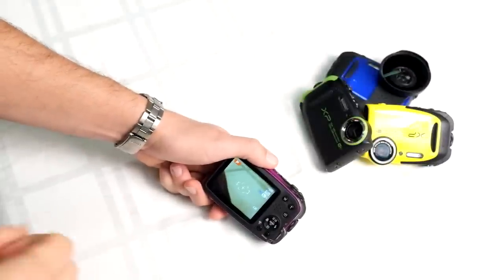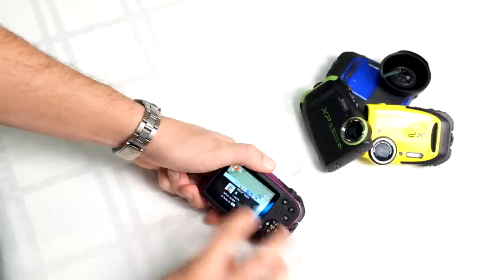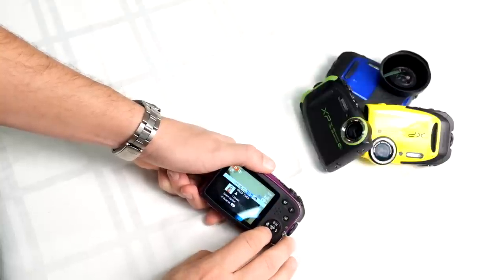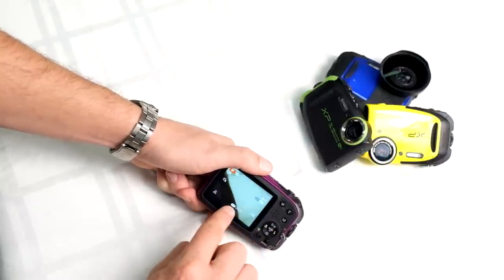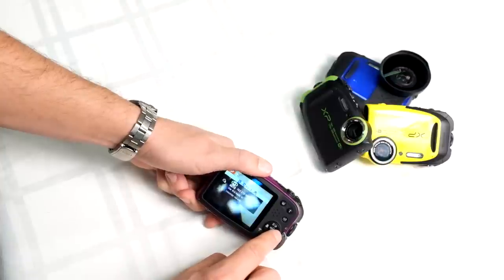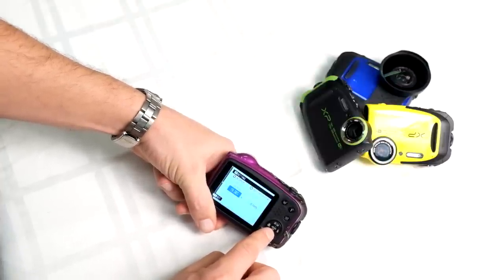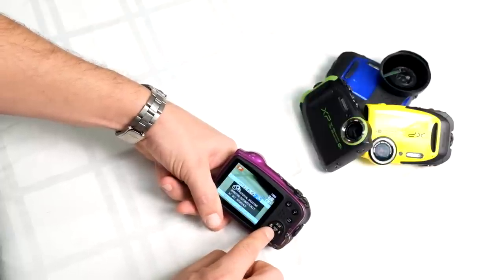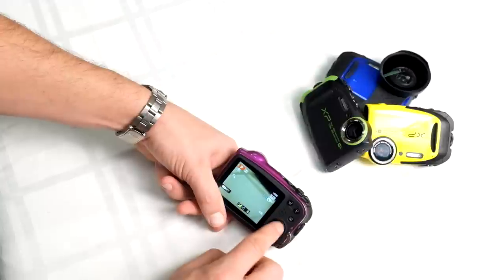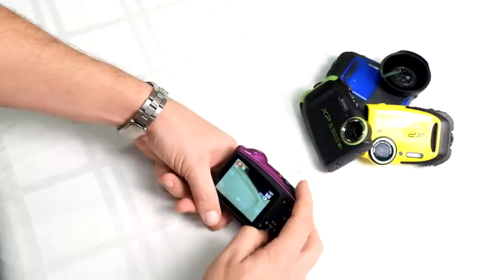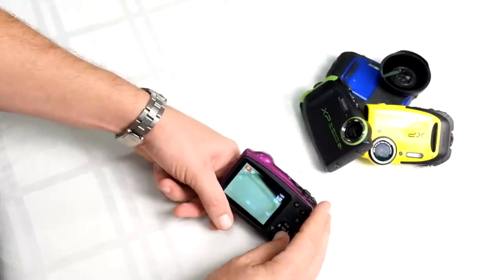For self-timer options, the camera has a two-second and ten-second self-timer, as well as a group timer. The group timer is really neat - it allows you to choose how many faces you're going to have. You can select the number of faces by pressing up, and then it'll automatically determine when there's a face in the picture to take a picture.